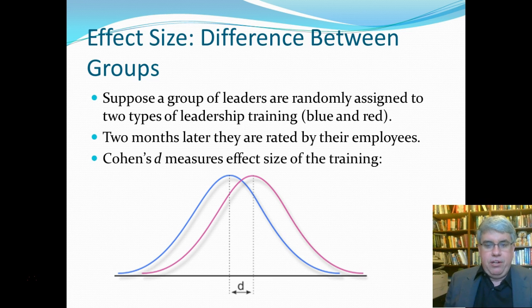That's what we see here, that the red group improved more on the average than the blue group, and this distance between the peaks is what we call d. It's Cohen's d, and it measures the effect size of a difference between two groups. So here it measures the effect size of the training. The red group was d better than the blue.